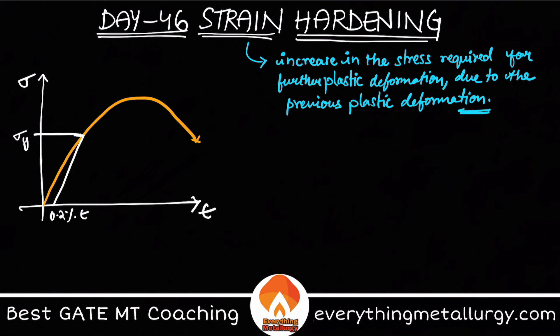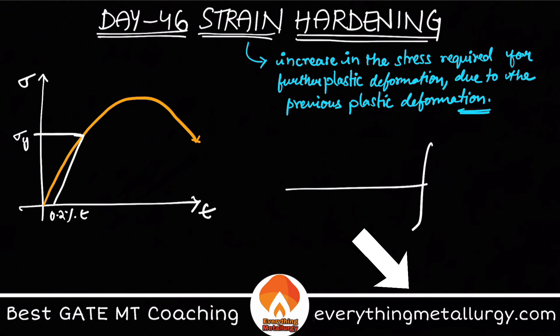Now, why does strain hardening take place? Let's say you have some barrier over here. Take this to be my slip plane. Slip is nothing but dislocation movement — if a dislocation is moving, we say it slips, and slip is the basic phenomenon required for plastic deformation. So my dislocations are moving on the slip plane in the applied shear stress direction, as it is moving along.